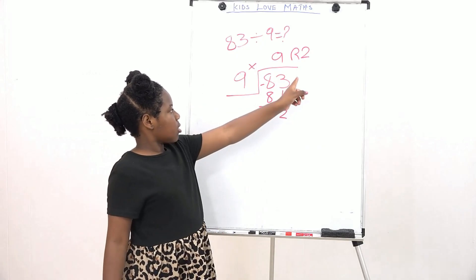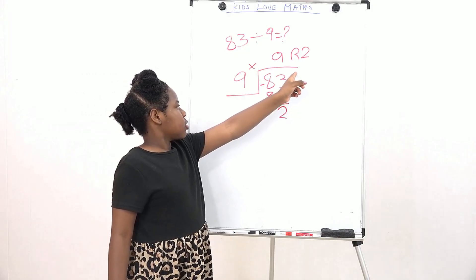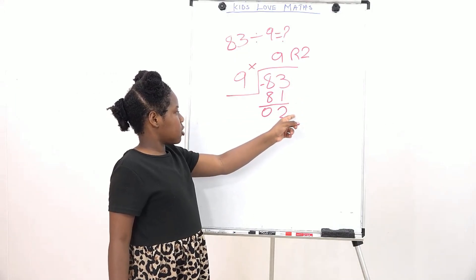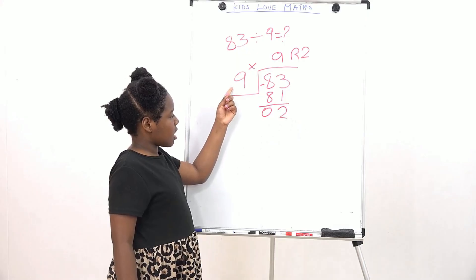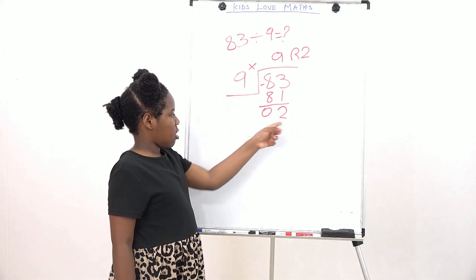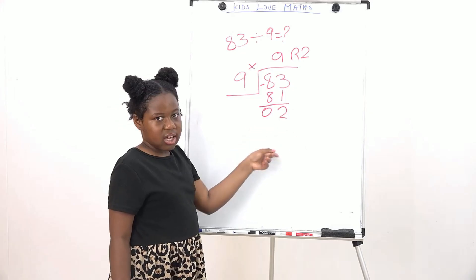If there was another number over here, you would just bring it down next to the 2. Then you'd get the answer, put it under here. Then you'd subtract again and get an answer.